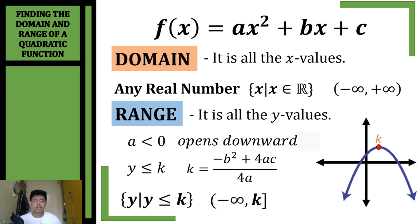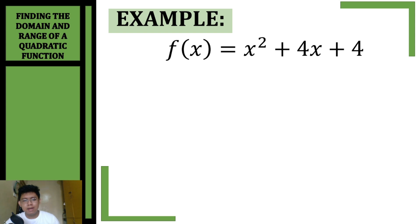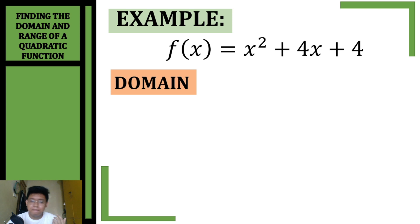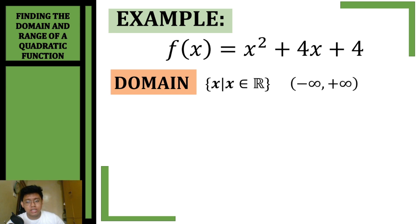Let's have some examples. For our first example, we'll find the domain and the range of f(x) = x² + 4x + 4. The domain of a quadratic function is always any real number, so we have x such that x is an element of any real number, or in interval form from negative infinity to positive infinity.